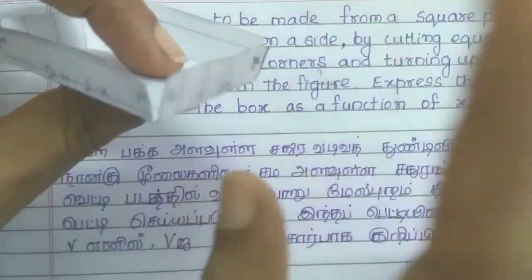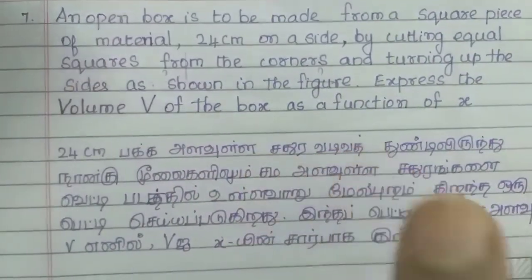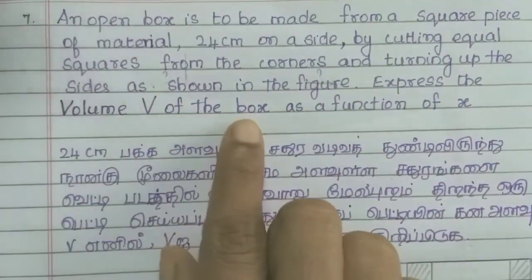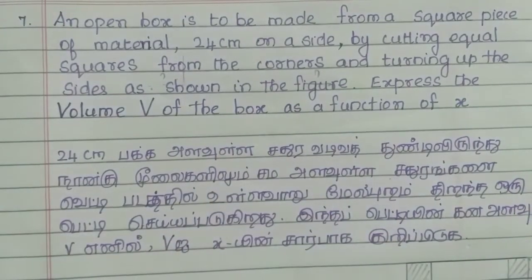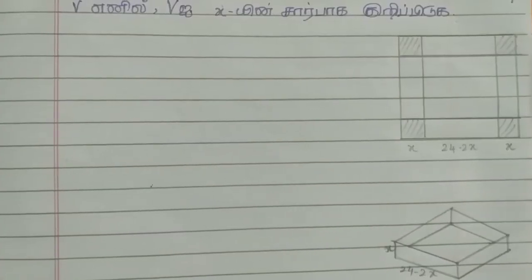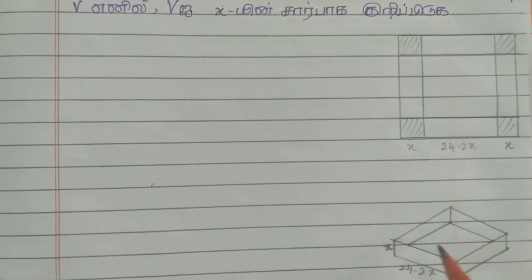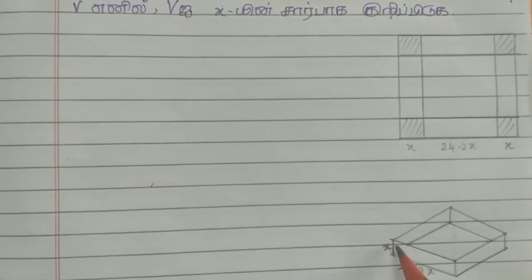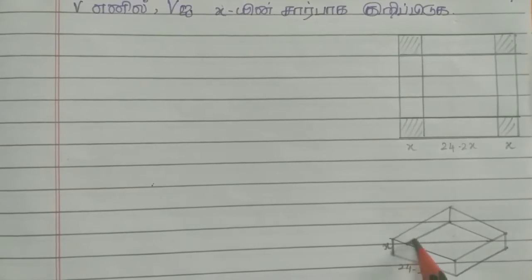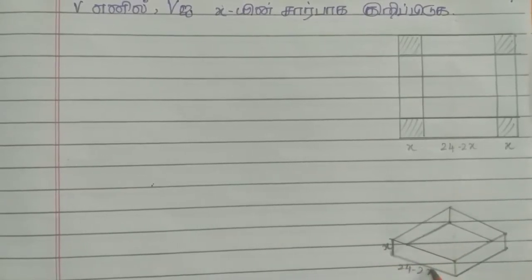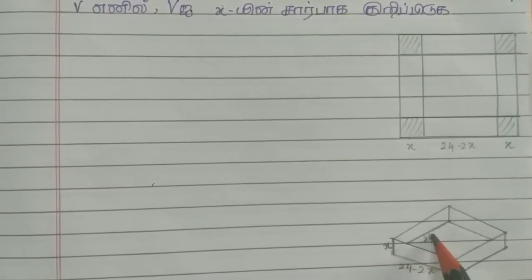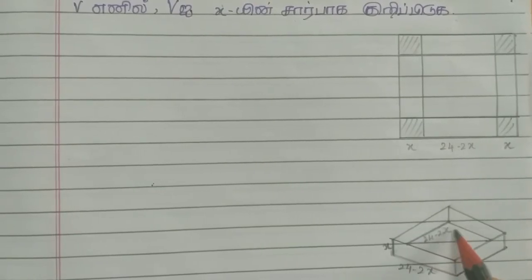So the volume of the box equals the volume of the cuboid. The height is x, the length is 24 minus 2x, and the width is 24 minus 2x. So: Volume = (24 − 2x) × (24 − 2x) × x.